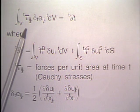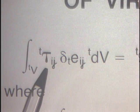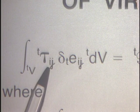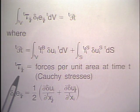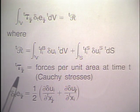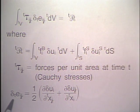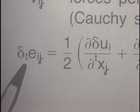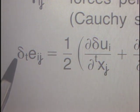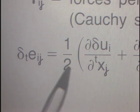On the left-hand side, we have t-tau-i-j, the Cauchy stress — a force per unit area at time t — and a virtual strain delta t-e-i-j. The virtual strain is defined as the partial of delta-u-i with respect to the current coordinate t-x-j. These are the key quantities in the principle of virtual work.